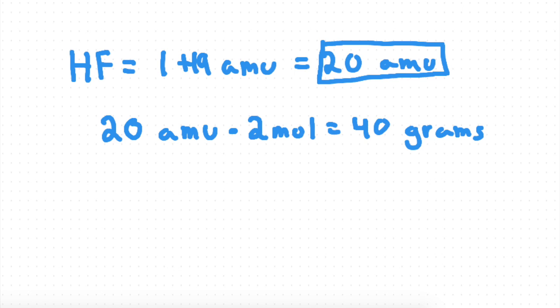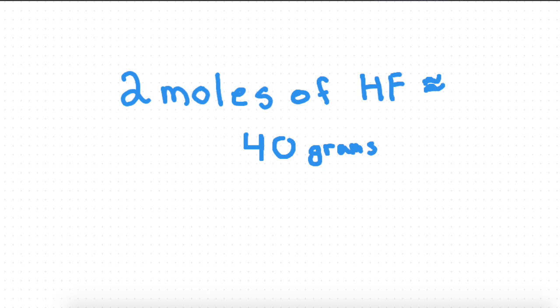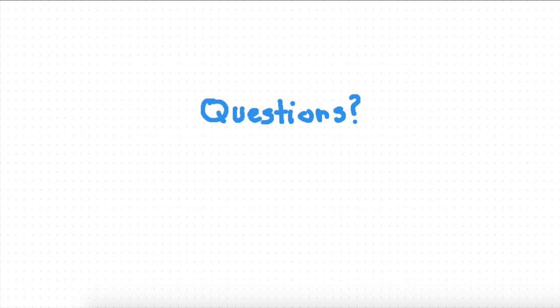And 20 times 2 is 40, so we'll get 40 grams. 2 moles of HF, or hydrogen fluoride, would equal 40 grams. Great job! Have any questions about this video? Put it in the comments or email us through thesciencekids.com.